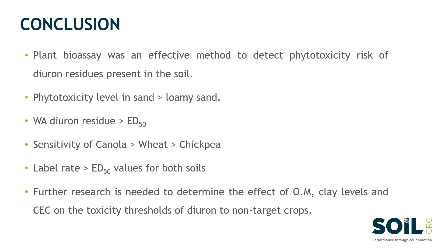To summarize: plant bioassay was an effective method to detect the phytotoxicity risks of diuron herbicide residues present in the soil. The phytotoxicity level of diuron herbicide is much greater in sand soil compared to loamy sand soil. The diuron herbicide residue present in Western Australian paddocks is greater than or equal to the ED50 values in both soil types. Canola crops show the most sensitivity to diuron herbicide compared to wheat and chickpea. The higher rate of diuron herbicide can cause more than 50% inhibition of all tested species in both soil types. But we need further research to determine the effect of organic matter level, clay content level, and cation exchange capacity on the phytotoxicity threshold levels of diuron herbicide on non-target crops. Thank you.